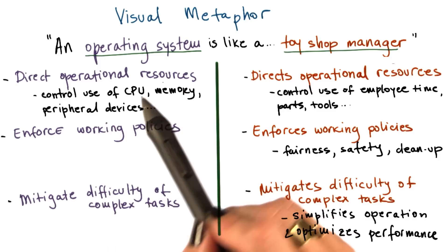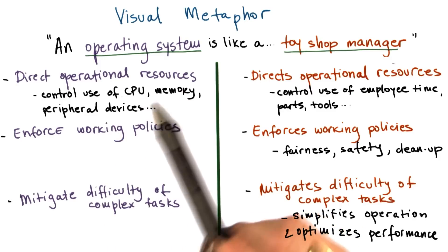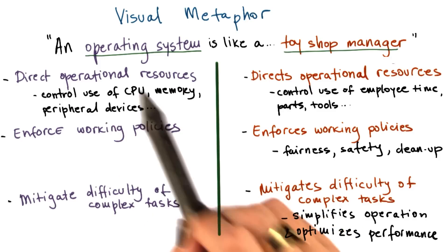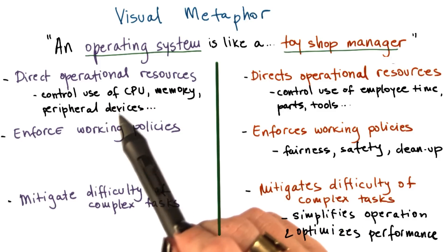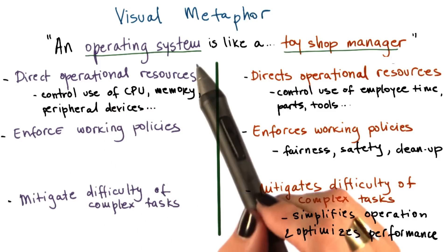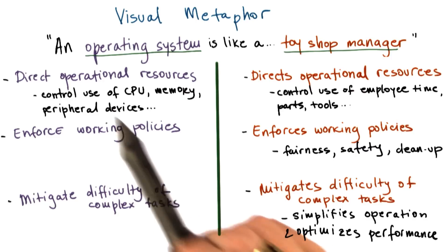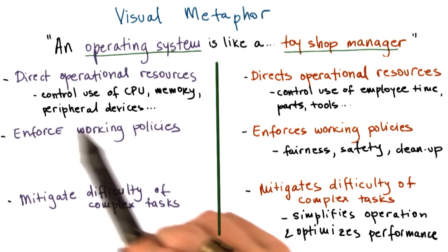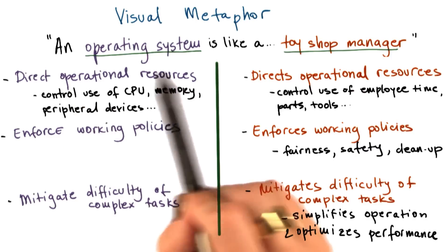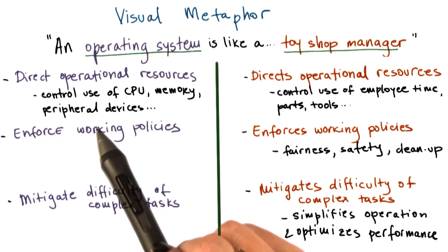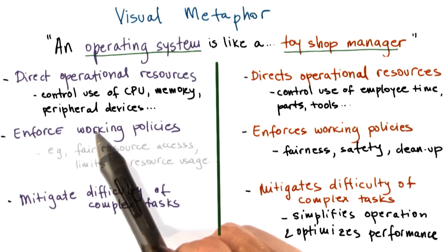In particular, they control the use of the hardware — CPU, memory, peripheral devices such as disk, network cards, etc. — and they decide how these resources will be allocated to applications.